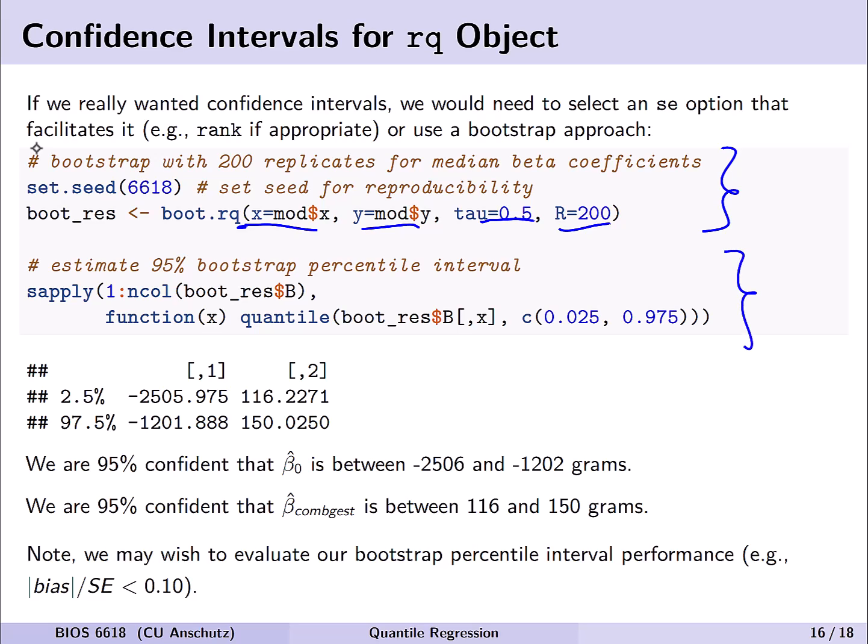Now, after doing this approach here, we can then estimate a 95% bootstrap percentile interval. So here you can see we're just going through our bootstrap samples here and estimating this at the 2.5th and 97.5th percentiles of the bootstrap distribution. And we see that we get our confidence intervals done here for β̂₀ and β̂₁ for our given median estimates. Or in other words, we're 95% confident that β̂₀ is between negative 2,506 and negative 1202 grams. Again, not really interpretable in this case. Or more meaningful, we are 95% confident that β̂ₖₒₘᵦ is between 116 and 150 grams. Or in other words, the weight change for an additional week of gestational age is between 116 and 150. Note, we also may though, we're not going to go into detail here, but wish to evaluate the performance of our bootstrap percentile interval. For example, is the absolute bias divided by the standard error of our bootstrap distribution less than our rule of thumb of 0.1.